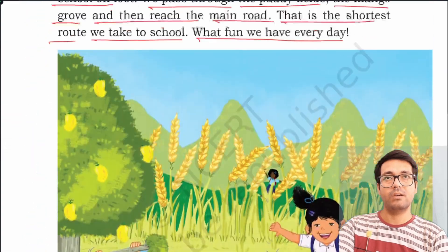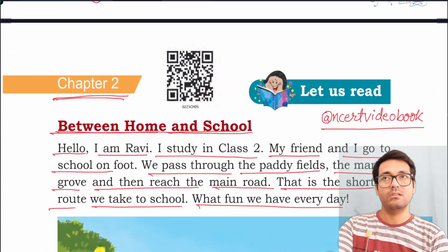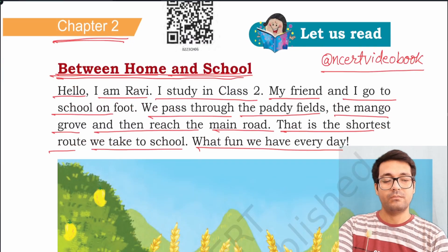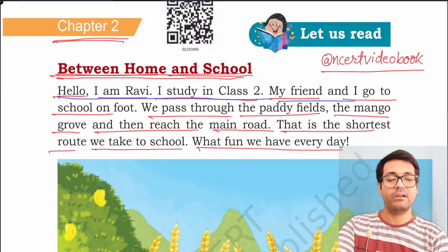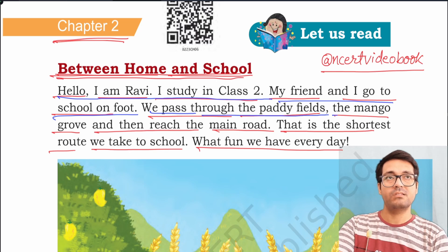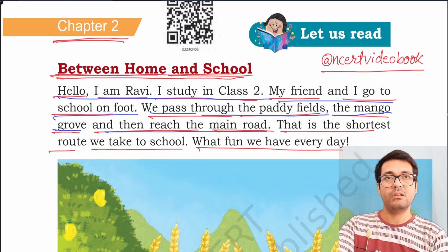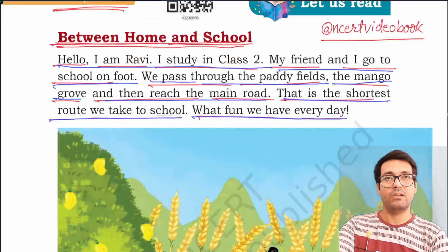Let's revise the chapter once again. Chapter: Between Home and School. Hello, I am Ravi. I study in class 2. My friend and I go to school on foot. We pass through the paddy fields, the mango grove, and then reach the main road. That is the shortest route we take to school. What fun we have every day!